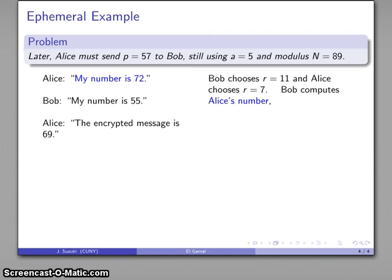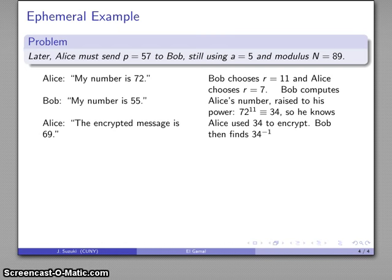Again, Bob takes Alice's number, raises it to his power, and computes that the encryption key must have been 34, and so he finds the multiplicative inverse of 34, works out to be 55, and now Bob is in a position to decrypt the message.